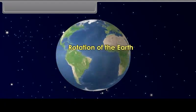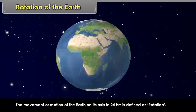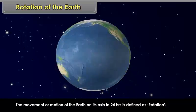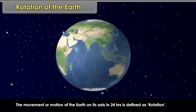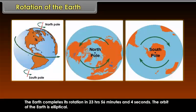Rotation of the Earth. The movement or motion of the earth on its axis in 24 hours is defined as rotation. The axis of the earth is an imaginary line joining the north pole with the south pole. It makes an angle of 66 and a half degrees with its orbital plane. The earth completes its rotation in 23 hours, 56 minutes and 4 seconds. The orbit of the earth is elliptical.